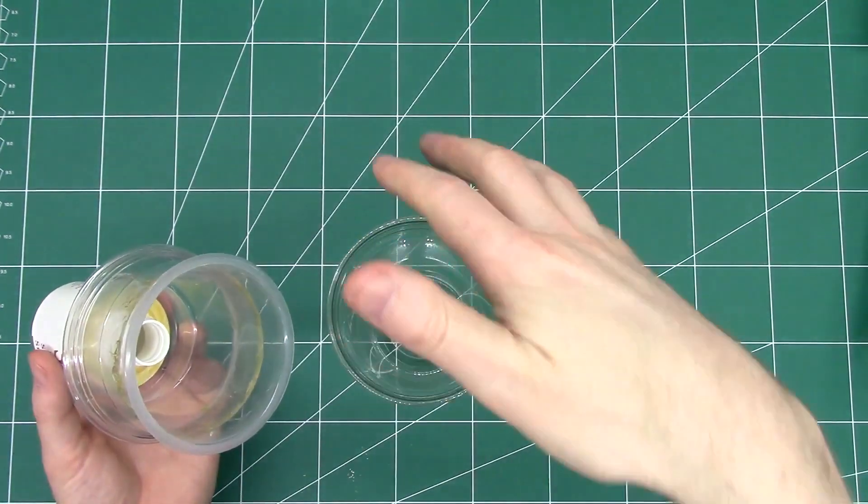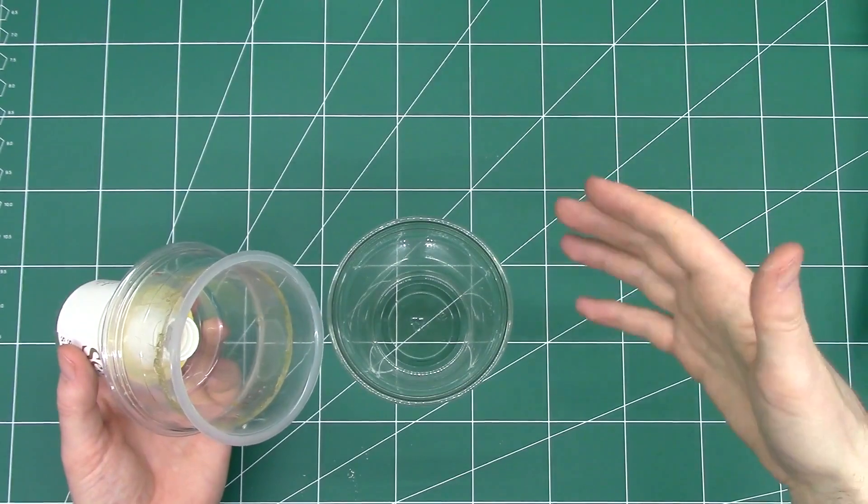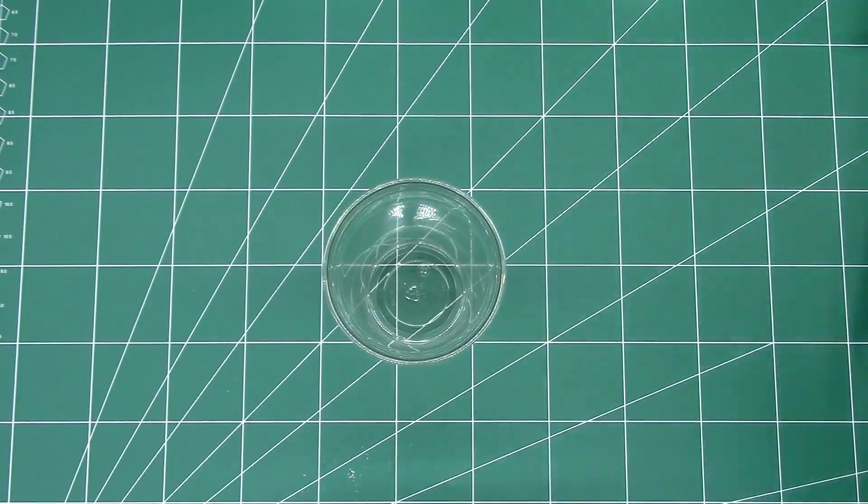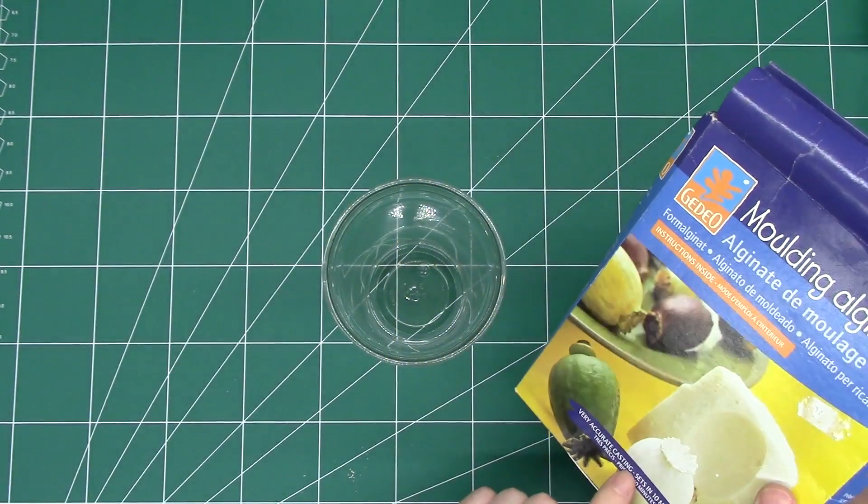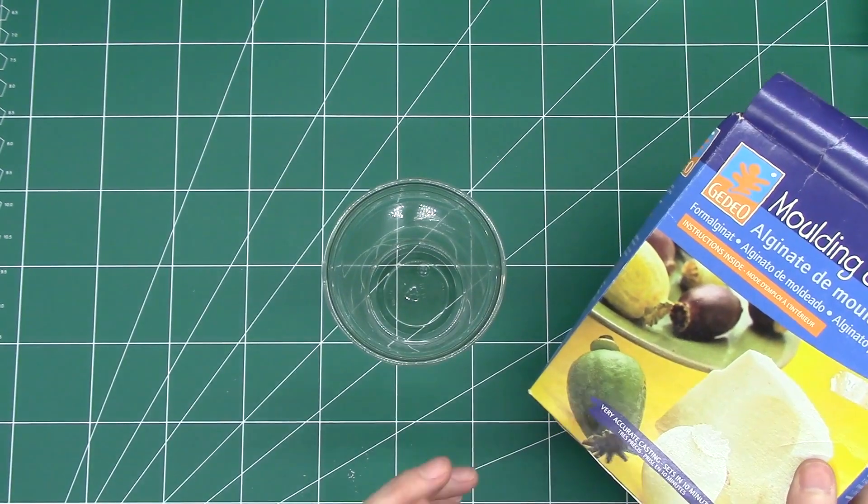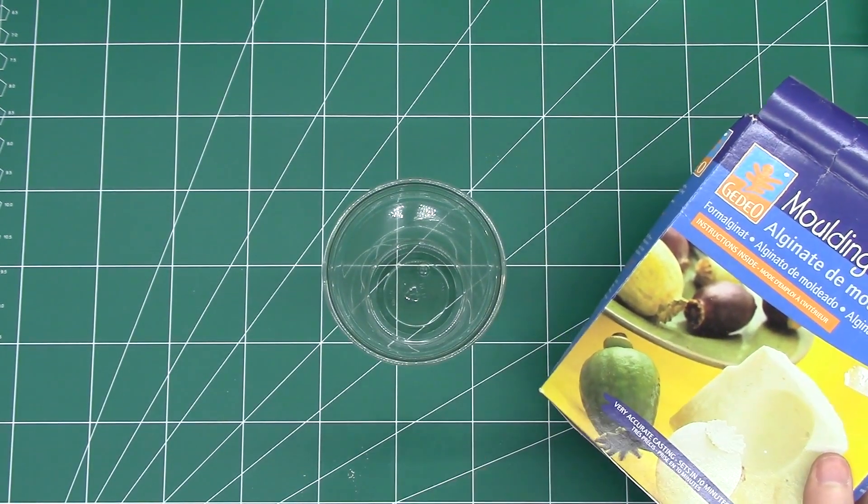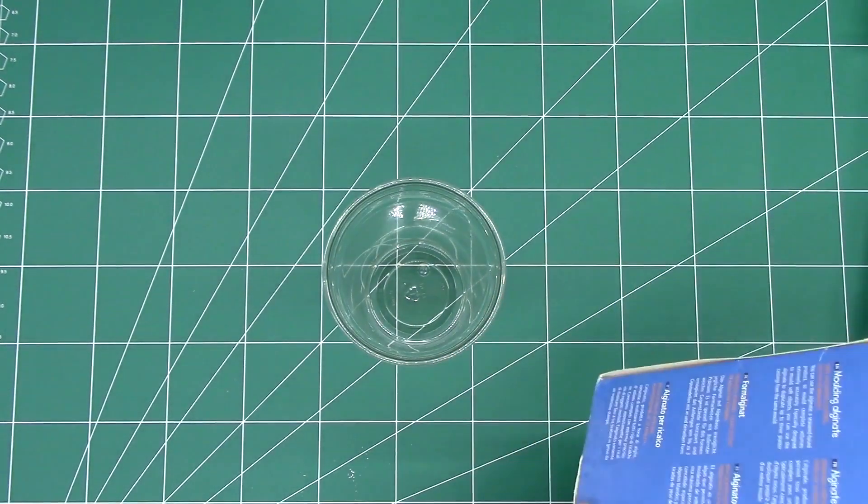And then you can carefully remove your master. So people use alginate for making casts of hands and other very delicate materials. And the alginate will produce a mold of your object. It's quite a fragile mold. You'll only get maybe one or two or three casted pulls out of your object.